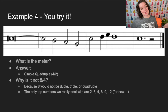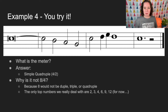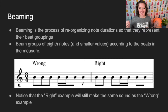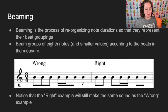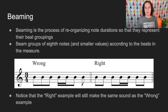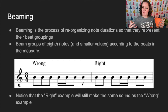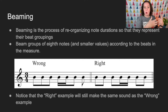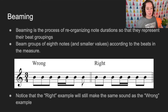Eventually we'll get into asymmetrical meters with five and seven on top, but we don't deal with eight on top right now. Now let's talk about beaming. Beaming is the process of reorganizing note durations so they represent their beat groupings — grouping eighth notes and smaller values according to the beats in the measure.